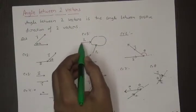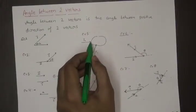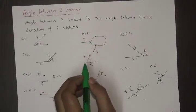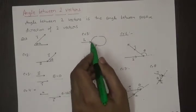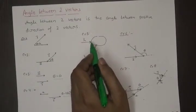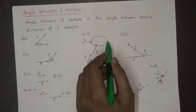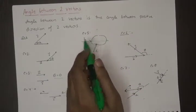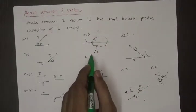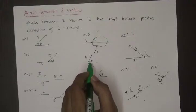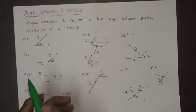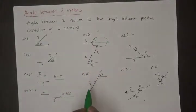Next example: a force F1 is acting on a body in this direction and a force F2 is acting on the same body in this direction. What is the angle between the two forces? We have to find the angle between the positive directions of the two vectors. The positive direction of F1 is this, the positive direction of F2 is this, and therefore this is the angle between the two vectors.